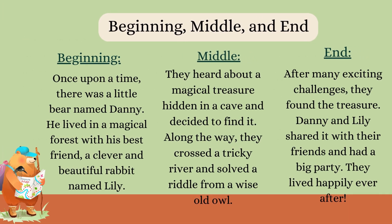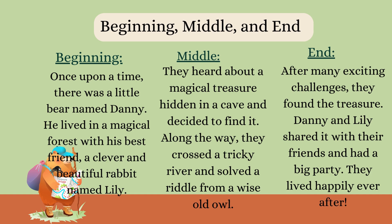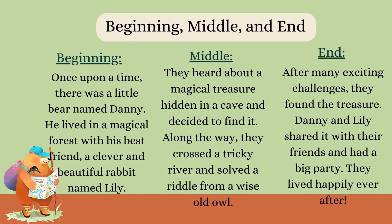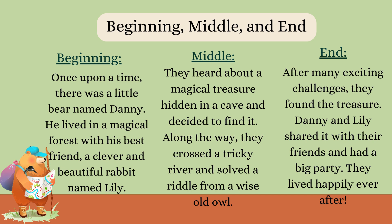Beginning, middle, and end. Beginning: Once upon a time, there was a little bear named Danny. He lived in a magical forest with his best friend, a clever and beautiful rabbit named Lily. Middle: They heard about a magical treasure hidden in a cave and decided to find it. Along the way, they crossed a tricky river and solved a riddle from a wise old owl.